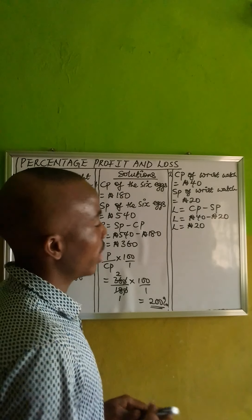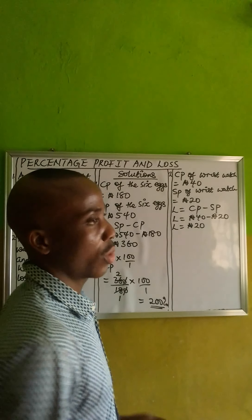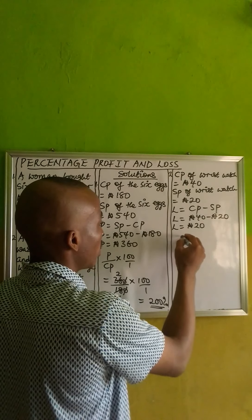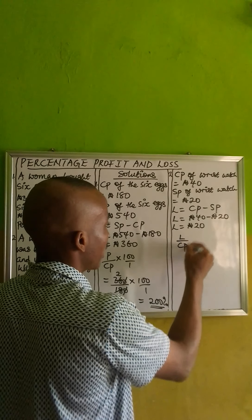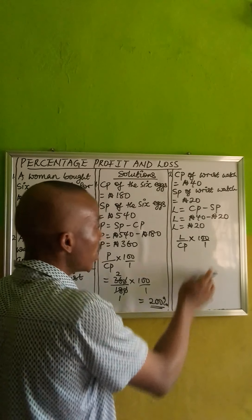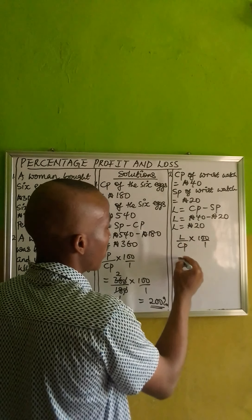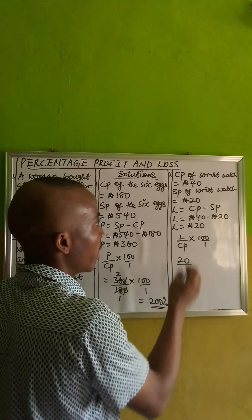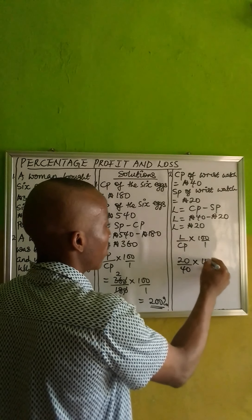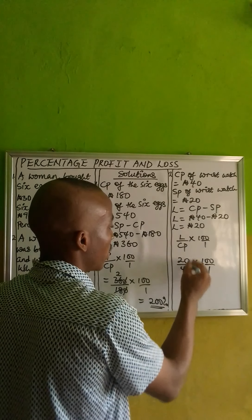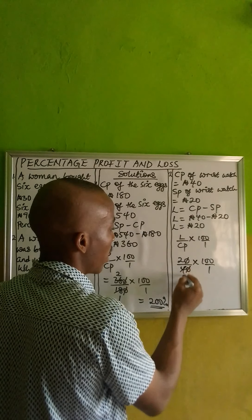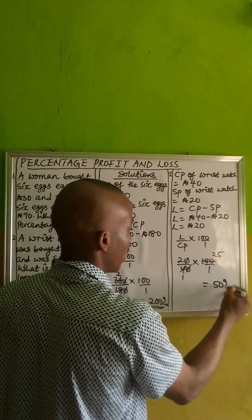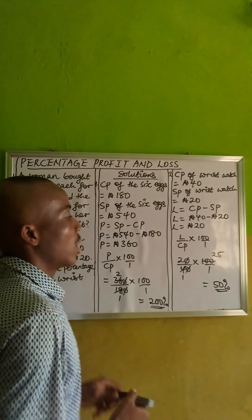We are not done here. The question says what is the percentage loss, not loss. So we now write our formula for percentage loss, which is loss over cost price times 100 over 1. What is the loss from here? The loss is 20 over — what is the cost price? The cost price of the wristwatch is 40, multiplied by 100 over 1. 1 zero cancels 1 zero. 4 into 100 is 25. 25 times 2 will give us 50%.